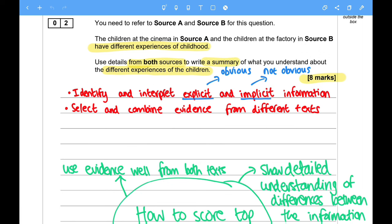You need to refer to Source A and Source B for this question. The children at the cinema in Source A and the children at the factory in Source B have different experiences of childhood.